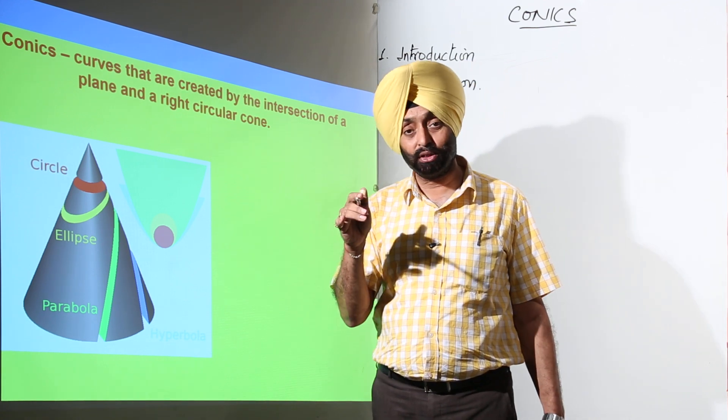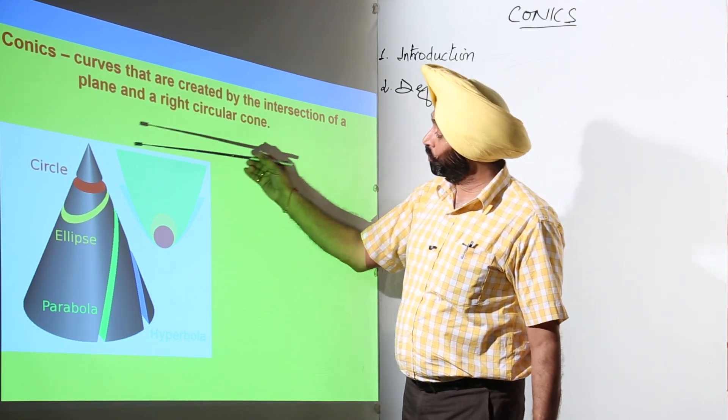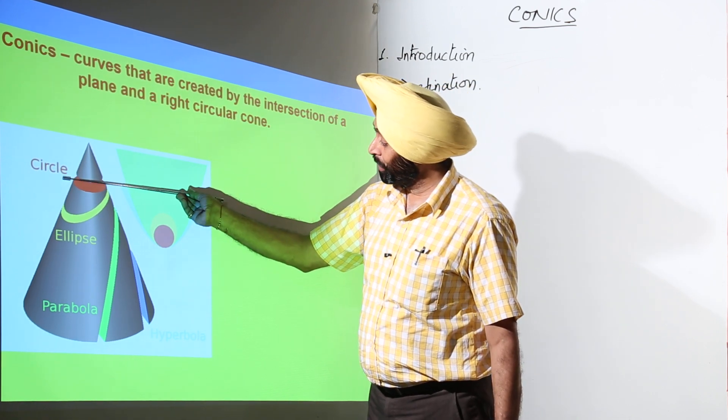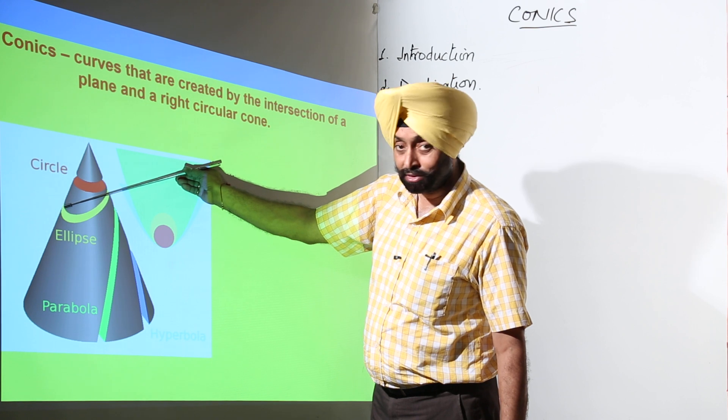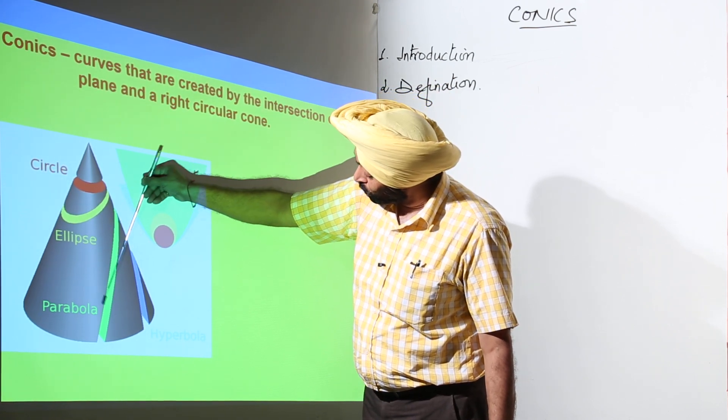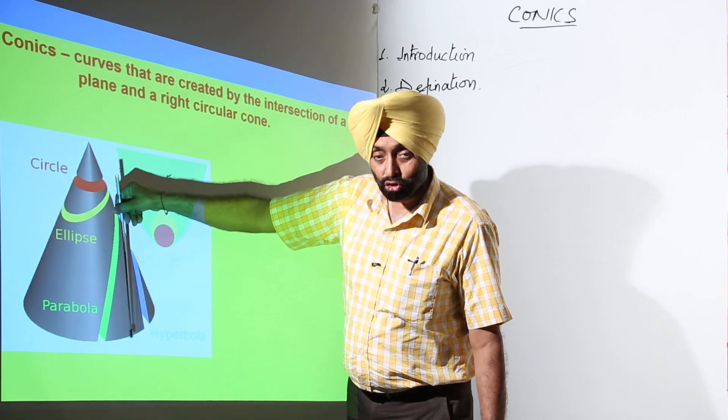Now, you will say how is it a figure? For example, suppose this is a plane. The angle of a plane becomes like this. Now it goes like this, and then from here it goes like this, and then like this.